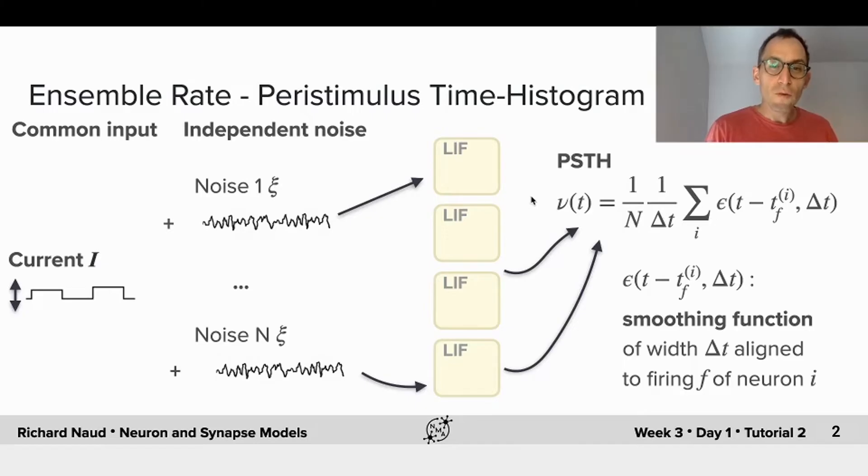And what we can do is to try to measure the average number of spikes that are in a time bin or a certain time window. So this approach is called the ensemble rate or the peristimulus time histogram.